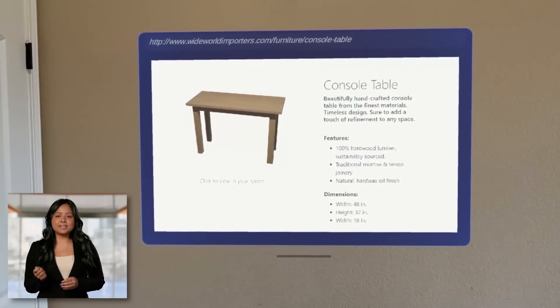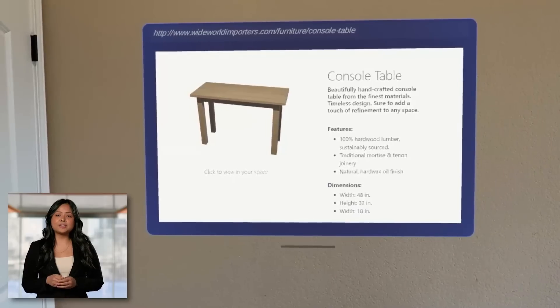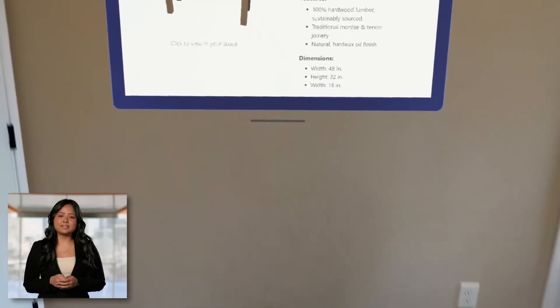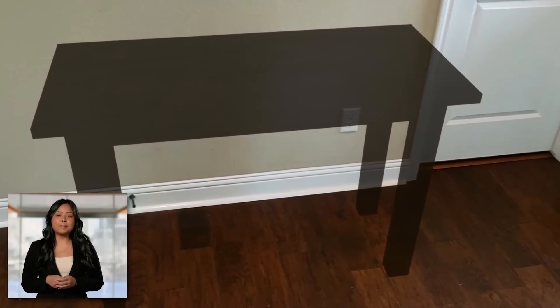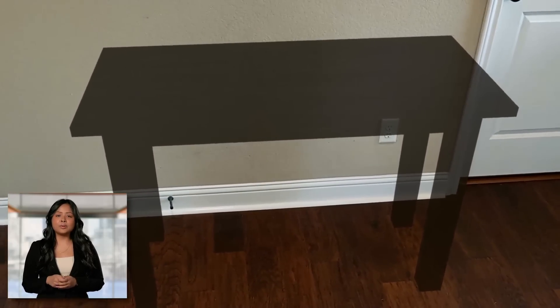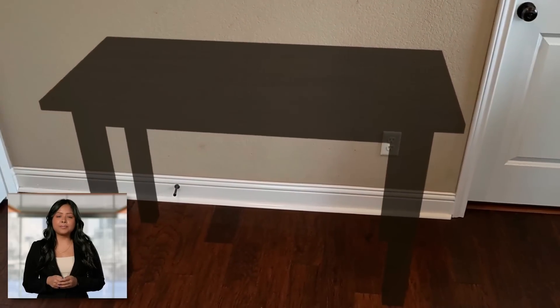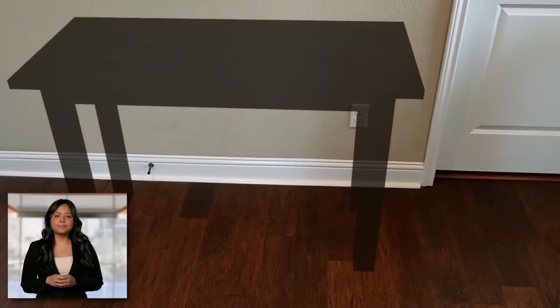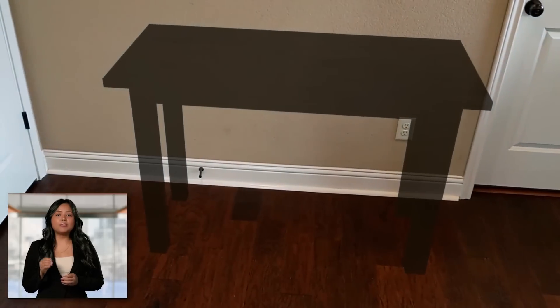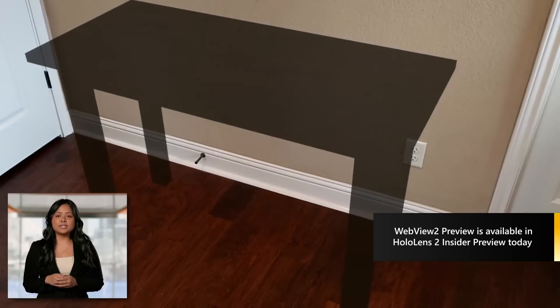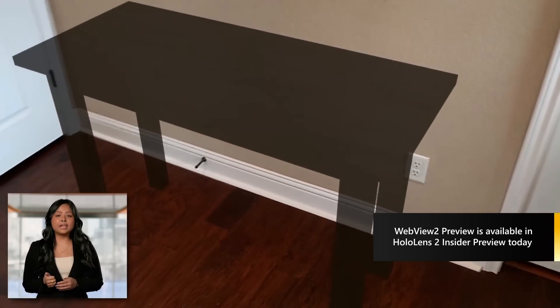We will now transition to a demo of WebView 2 on HoloLens 2. Here, we have a simple demo of how you can browse through furniture models on the web and see how they look in your home using your HoloLens 2 device. In this example, I am able to grab the 3D model of a console table from a furniture website hosted by WebView 2 inside a Unity app and see how it looks in my entrance hallway. This is just a small example of how this can be scaled to a wide range of scenarios that impact the way frontline workers in various industries collaborate, learn, and work.